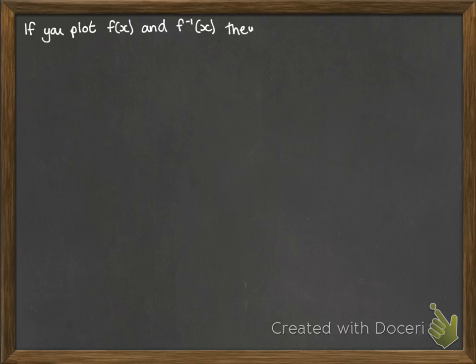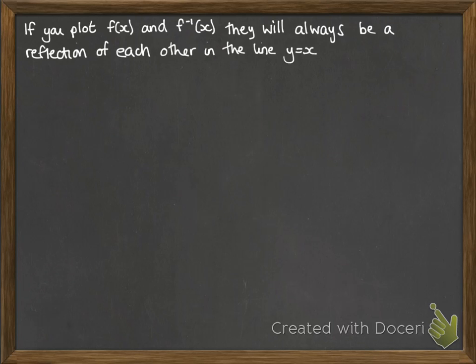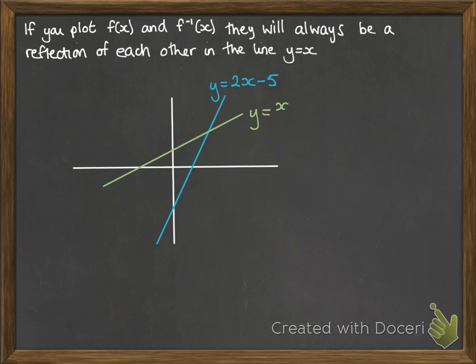If you plot a function and its inverse, they will always form a reflection of each other in the line y = x. We'll do it for those two we just found: y = 2x - 5 and the inverse (x + 5)/2. You can easily see that's a reflection in the line y = x. This comes up in exam questions quite a bit - you need to be able to plot and show the relationship between a function and its inverse.